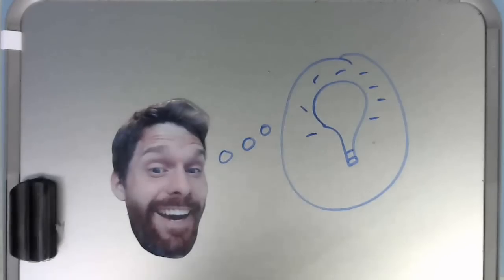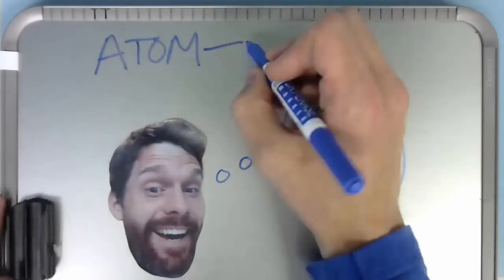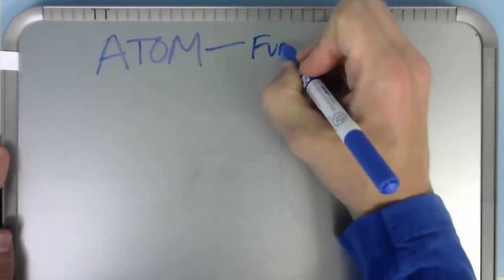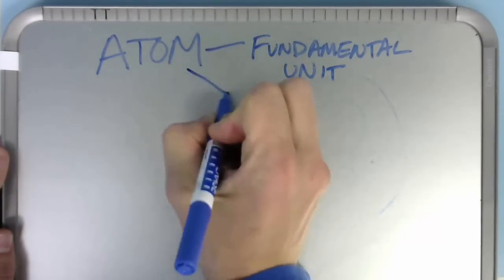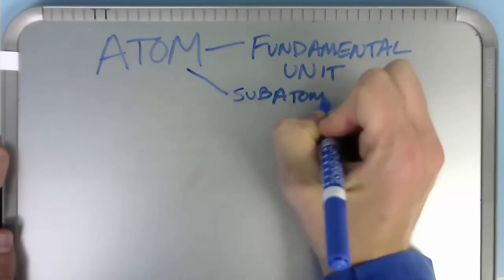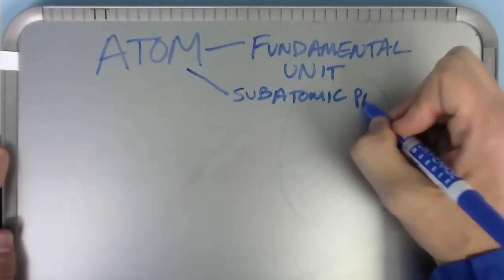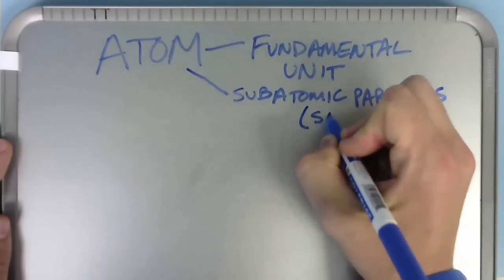The fundamental unit of chemistry is the atom. Atoms are made of subatomic particles, which we're going to abbreviate SAP.